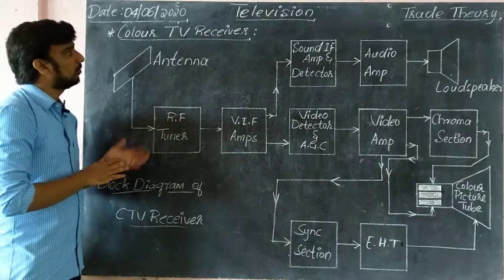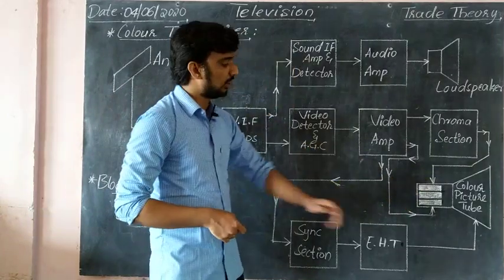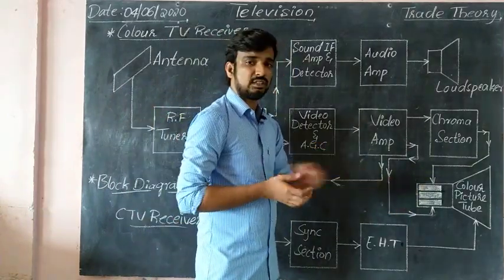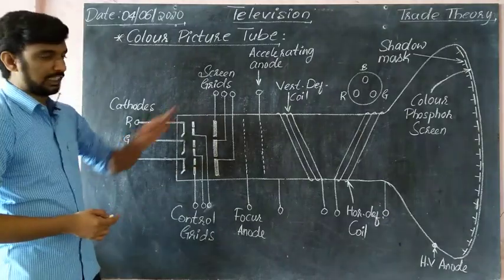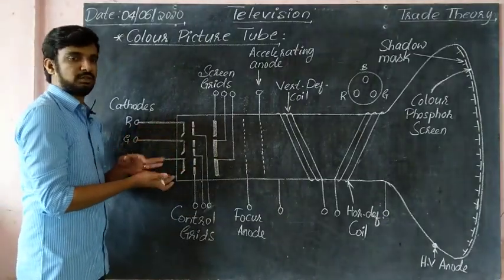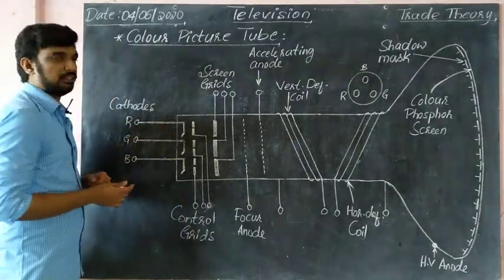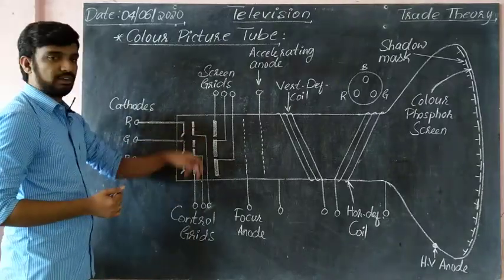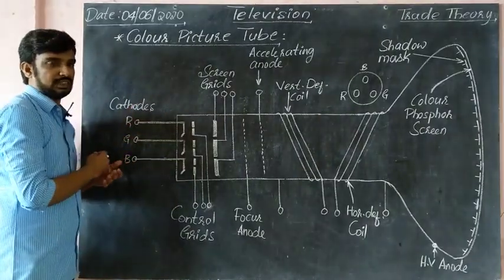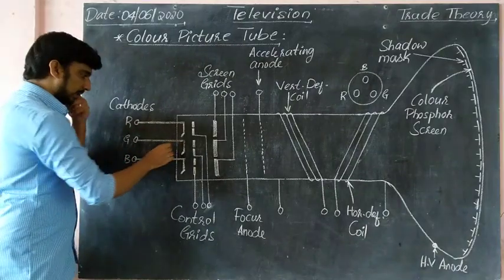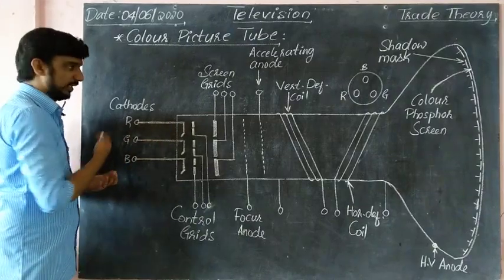So this is the color TV receiver overview. Next, the picture tube is different. A black and white picture tube has only one electron gun, while the color picture tube has more electron guns. This is the color picture tube structure. There is a normal black and white TV picture tube, and the color picture tube is a special color tube with three electron guns, three cathodes, three control grids, and three screen grids.